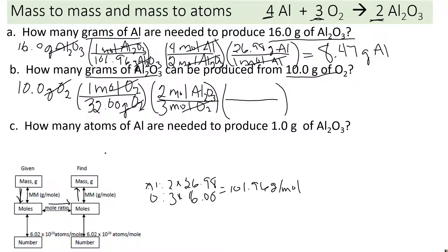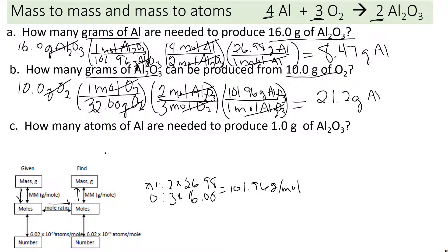Our last step is to get to grams. We already calculated that molar mass — it's 101.96 — so one mole of aluminum oxide on the bottom and 101.96 grams of aluminum oxide on top. The moles cancel, and going to the calculator: 10 divided by 32, times 2 divided by 3, times 101.96 equals — rounding to three significant figures — 21.2 grams of Al₂O₃. That's how many grams of aluminum oxide can be produced.